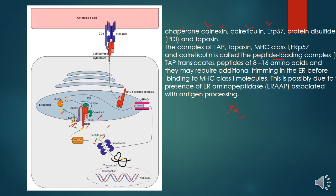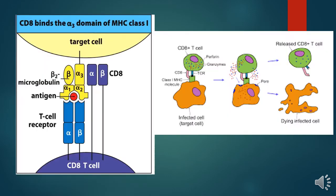The MHC-1-peptide complex then proceeds to the cell surface via the Golgi body, where it is presented — this is antigen presentation. This MHC-1 complex is recognized by T cell receptors. CD8 is the coreceptor that recognizes MHC-1; the alpha-3 chain of MHC-1 and the alpha chain of CD8 bind together, inducing a cytotoxic response. Perforin and granzyme are the most abundant proteins within the lytic granules of CD8+ T cells. Perforin forms a pore in the target antigen-presenting cell, and granzyme enters the cell and induces apoptosis. After apoptosis, the CD8+ T cells are released.